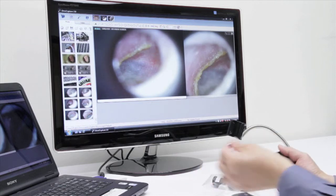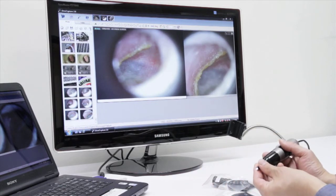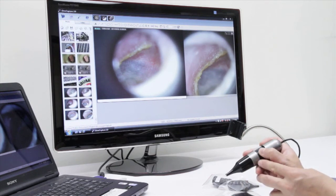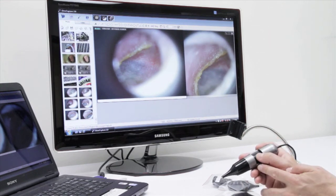This scope also comes with three different diameters of disposable ear specula, ranging from 3, 4, and 5mm diameters. Applying the specula and putting it into the ear is very simple.